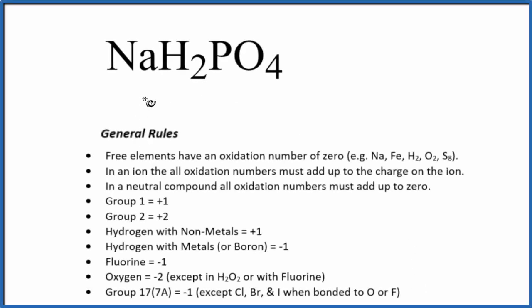To find the oxidation numbers for each element in NaH2PO4, this is sodium hydrogen phosphate. We'll use these general rules here.